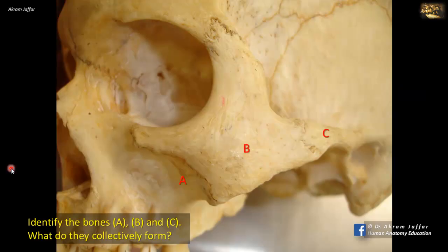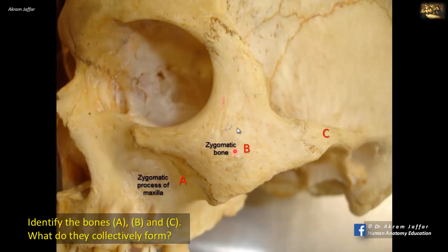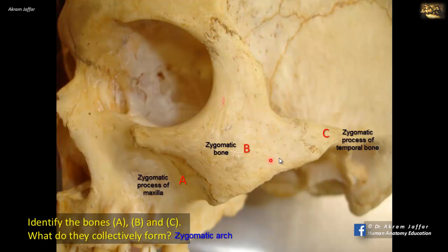Identify the bones A, B, and C. What do they collectively form? A is the maxilla — specifically the zygomatic process of the maxilla. B is the zygomatic bone itself. And C is the zygomatic process of the temporal bone. Together, the three of them form the zygomatic arch.